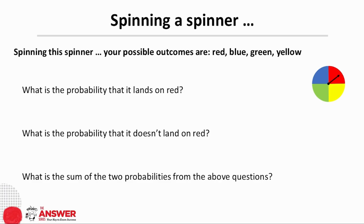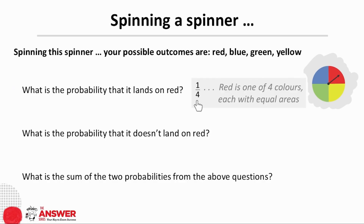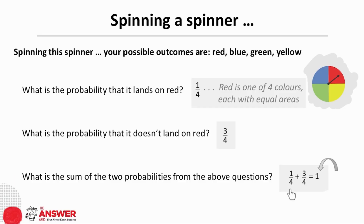Let's move on to considering the spinner now. This spinner has four colours in equal portions. The probability of the spinner landing on red is therefore a quarter, red being one of the four colours. The probability that it doesn't land on red is three quarters, meaning it can land on any of the other three colours. What is the sum of these two probabilities? A quarter plus three quarters is one, which indicates that these two scenarios cover the full set of possible outcomes with this spinner.